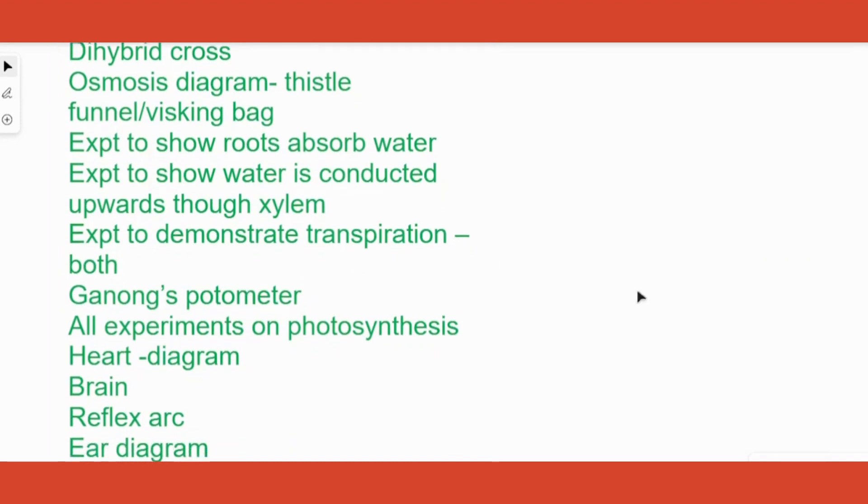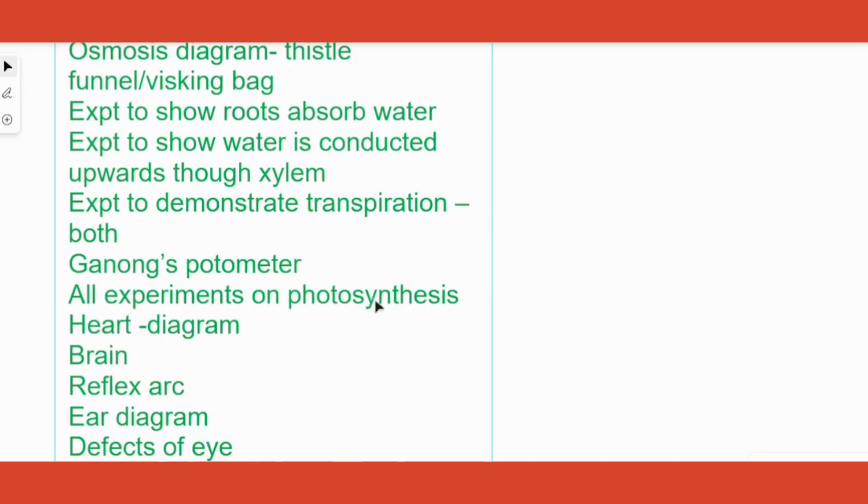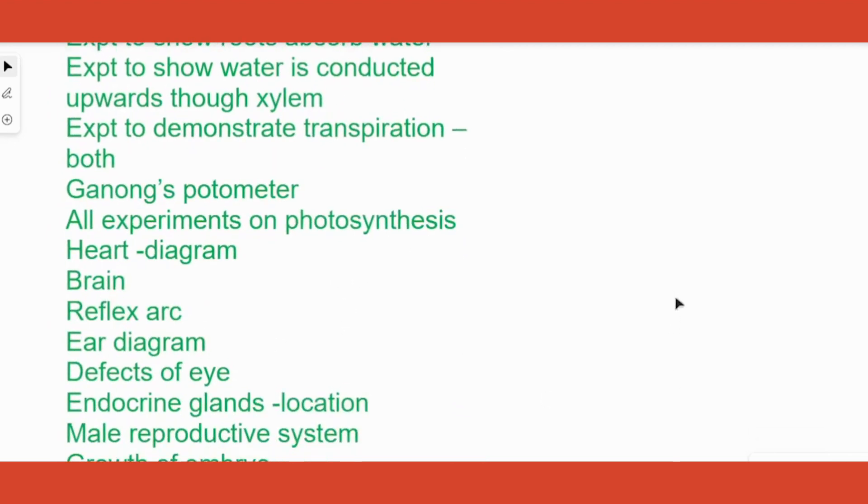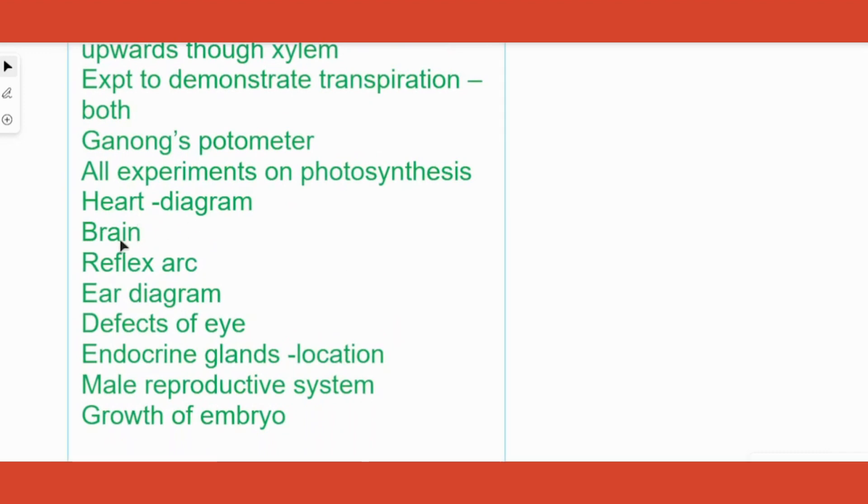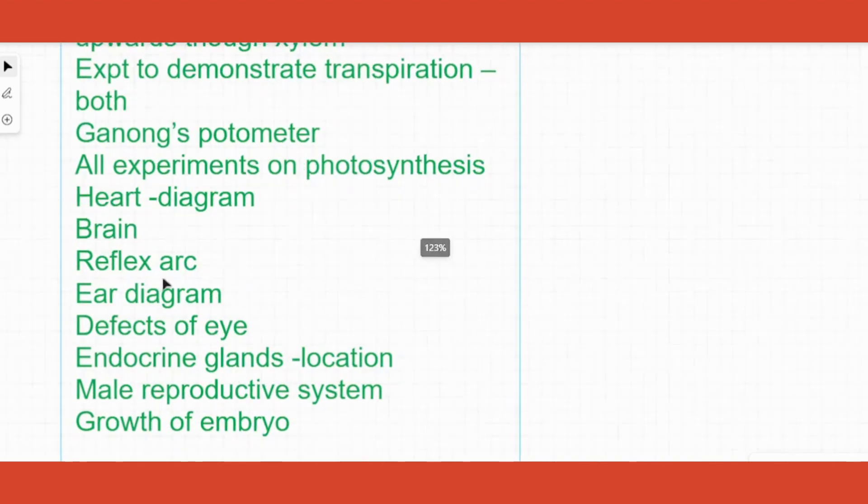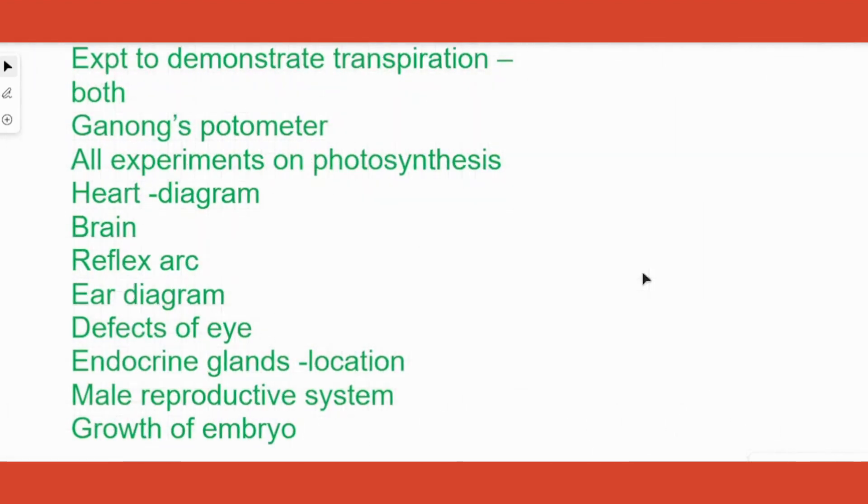All those experiments also from photosynthesis where the experiment is about to show sunlight is required, to show oxygen is required, all those questions can come. Then heart diagram again favorite question, brain diagram has repeated so many times, reflex arc can be put and then they ask some questions related to the sequence of it or direct definition questions can come.